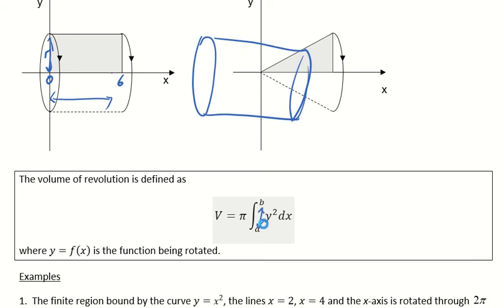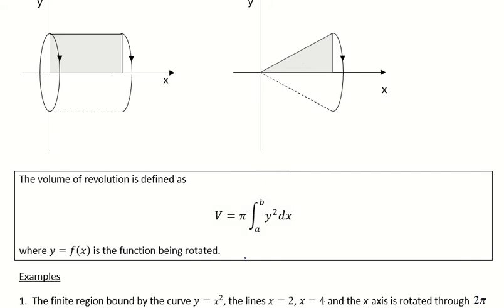Okay, so our formula, let's just go through it again. Our formula then is v is equal to pi times the integral between a and b of y squared dx. And that's where y is equal to a function of x, which is being rotated.